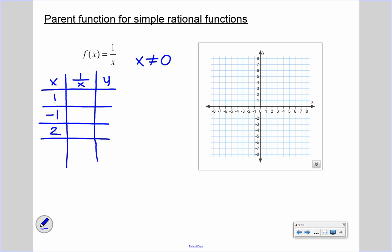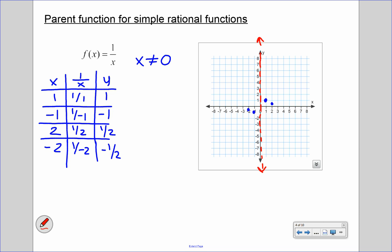Let's also try 2 and negative 2, then plug those in and plot these points on our graph. We have (1, 1), (negative 1, negative 1), (2, one-half), and (negative 2, negative one-half). Since x cannot equal 0, this graph will never touch or pass x equals 0 — this is called an asymptote, which gives us the guidelines and structure of the graph.